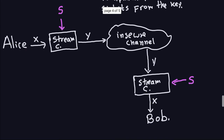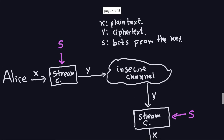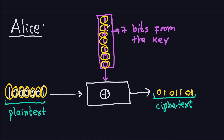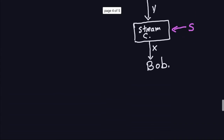The interesting part about this is that the process of encryption and decryption is exactly the same. I don't have to subtract s - there is no such thing as a minus XOR - because what's going to happen is if I take the ciphertext and XOR it again with the bits from the key, I'm going to get back the plain text. Those bits, exactly the same bits that Alice used for encryption, are the ones that will be used for decryption. You don't change anything at all.